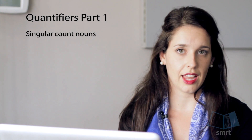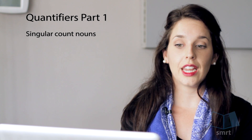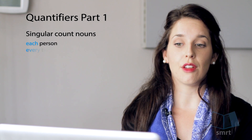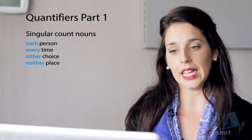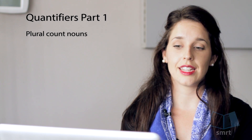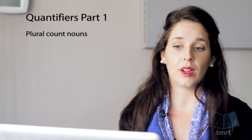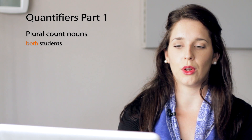There are certain quantifiers that can only be used with singular count nouns, meaning only one: each person, every time, either choice, and neither place. On the other hand, there are certain quantifiers we can only use with a plural count noun — and actually there's only one: it's 'both.' So, both students — just with the plurals.